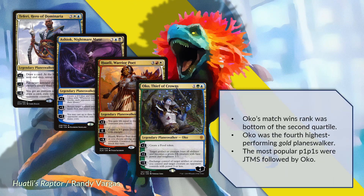A second surprise is that Oko Thief of Crowns had a weak showing. He is at the bottom of the second quartile of cards, and is only the fourth best gold walker, after 5-mana Teferi, 5-mana Ashiok, and Huatli Warrior Poet. I suspect that Oko was splashed too liberally, and that mid-range decks that favored the card had poor matchups against aggro and control — but this is wild speculation. By the by, the top two pack one pick ones were Jace the Mind Sculptor and Oko.